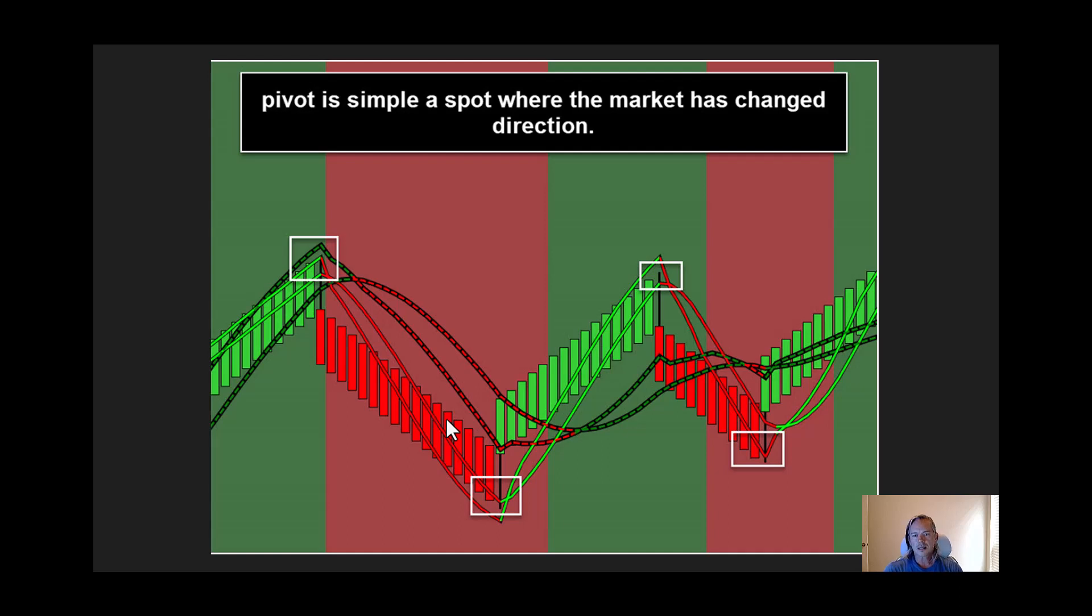Hey everybody, let's talk about the difference between a pivot and a pivot stopout. A pivot simply means that the market went up and down or down and up.